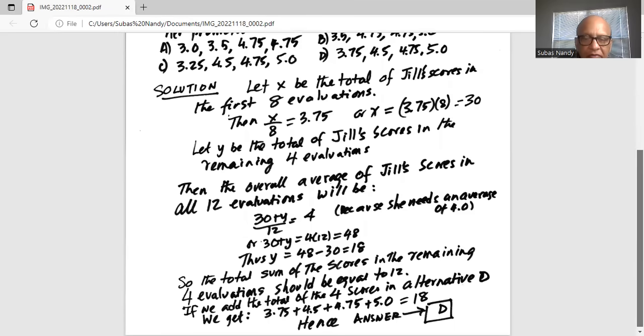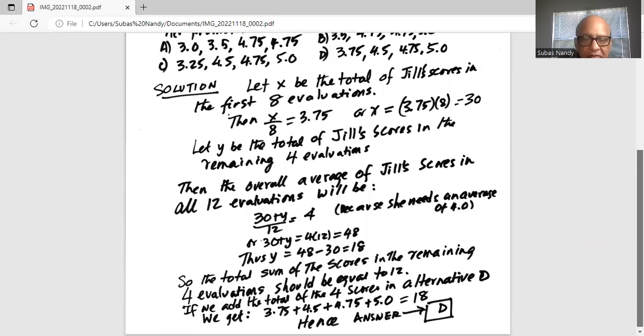If we add the total of 4 scores in alternative D, 3.75 plus 4.5 plus 4.75 plus 5, that adds up to 18. Hence the correct answer is alternative D because she needs a total of 18 in the remaining 4 exams.